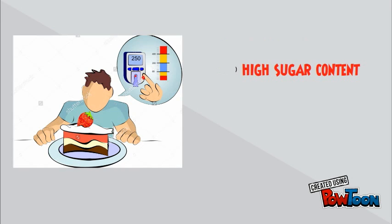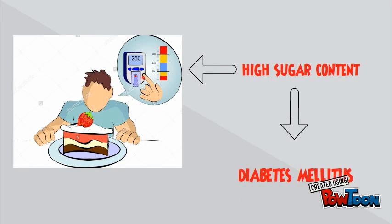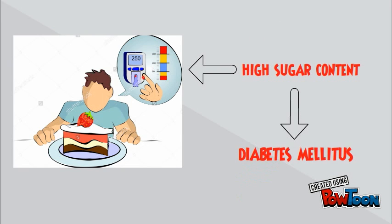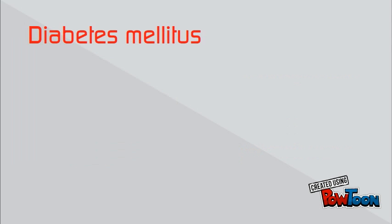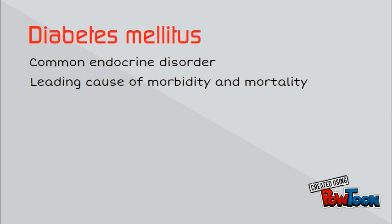Did you know you are exposing yourself to the risk of getting diabetes when you have high sugar intake in your daily diet? Diabetes mellitus is the most common endocrine disorder of carbohydrate metabolism. Worldwide, it is a leading cause of morbidity and mortality and a major health problem for most developed societies. The prevalence of diabetes continues to increase.